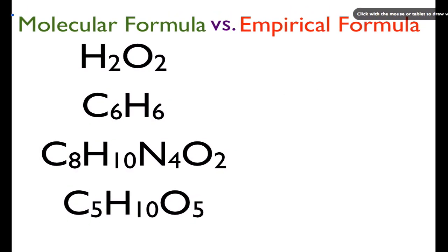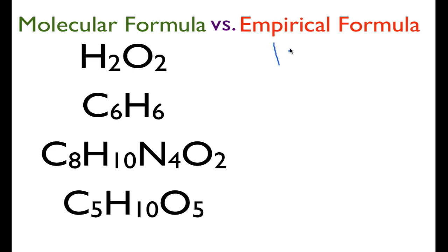We have four compounds here, and all four of these are molecular formulas. For each of these, we're going to go to the empirical formula. The way we do that is we simply reduce — reducing the molecular formula to its lowest ratio. We look at all the subscripts and see if they can be reduced. We have H₂O₂, hydrogen peroxide. Since 2 and 2 are both divisible by 2, the empirical formula is just HO.